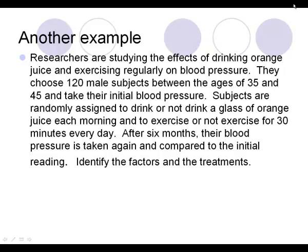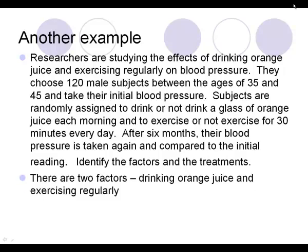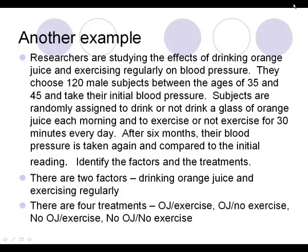Here's another experiment. Researchers are studying the effects of drinking orange juice and exercising regularly on blood pressure. They choose 120 male subjects between the ages of 35 and 45, take their initial blood pressure, and randomly assign subjects to drink or not drink a glass of orange juice each morning and to exercise or not exercise for 30 minutes a day. After six months, blood pressures are taken again. There are two factors — orange juice and exercise — and four treatment groups: OJ and exercise, OJ and no exercise, no OJ and exercise, and no OJ and no exercise.